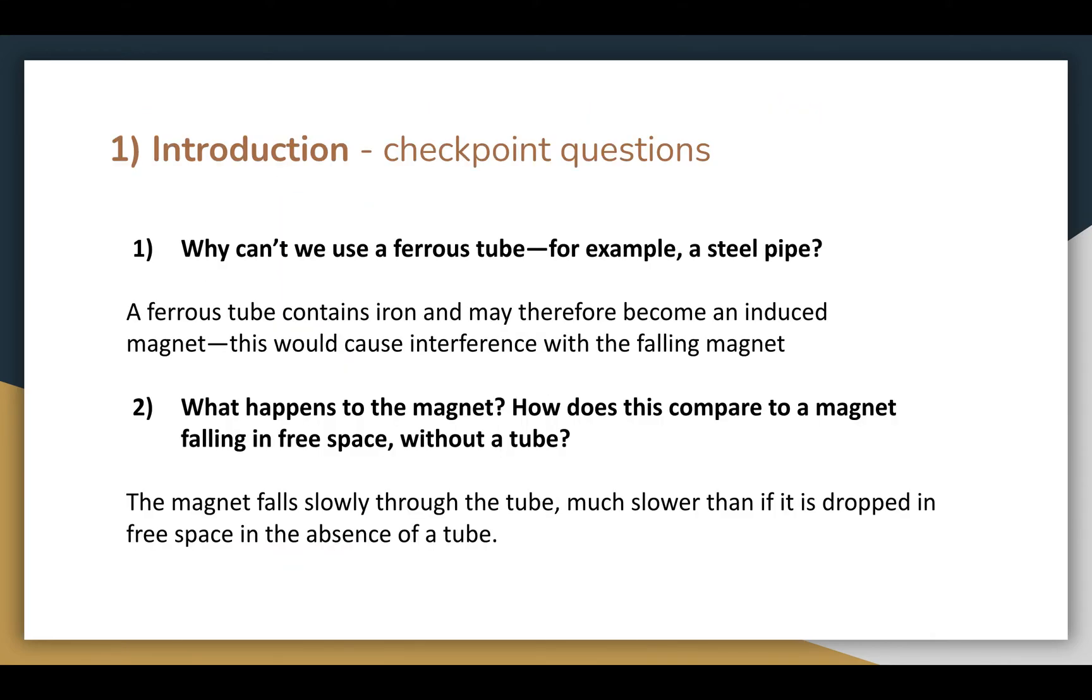So, why can't we use a ferrous tube for this experiment? Well, ferrous materials contain iron, and could therefore become induced magnets when the bar magnet is dropped through them, which would interfere with the falling magnet leading to inaccurate data. And what actually happens to the magnet, and how does this compare to when the magnet falls in free space? Well, the magnet is slowed down as it falls through the aluminum tube, and therefore falls much slower than it would in free space.